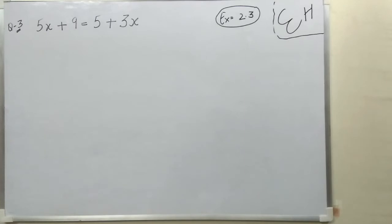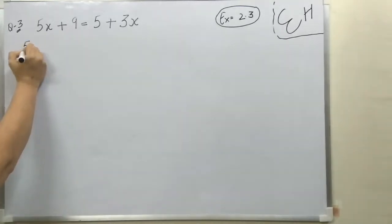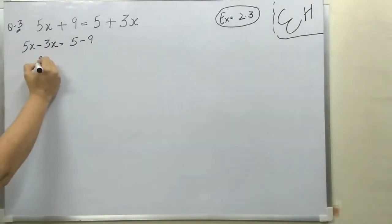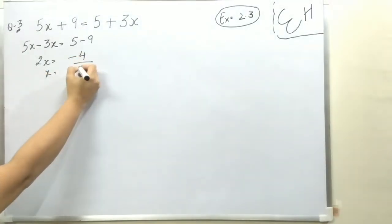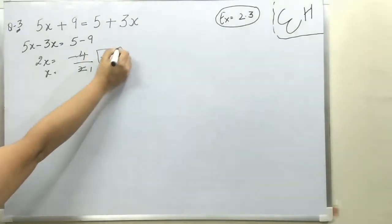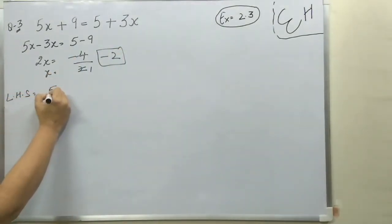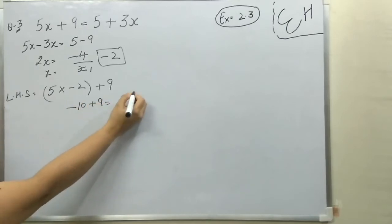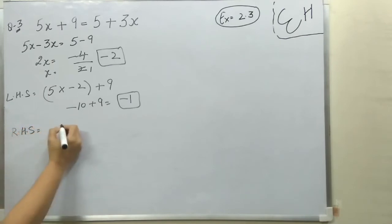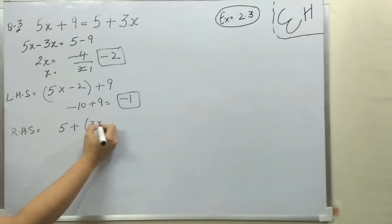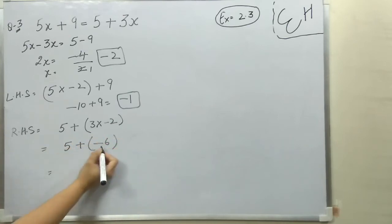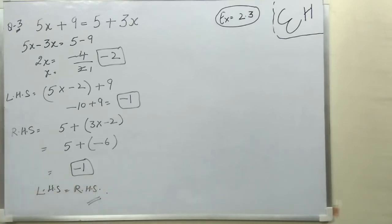Question number 3. 5x plus 9 is equal to 5 plus 3x. 3x is positive there; we bring it here and it will become negative. 9 is positive; we take it there and it will become negative. 5x minus 3x is 2x. 5 minus 9 is minus 4, so x is equal to minus 4 divided by 2, giving x is minus 2. Now put it in LHS: 5 into minus 2 plus 9 is minus 10 plus 9, which is minus 1. RHS is 5 plus 3 into minus 2, which is 5 minus 6, giving minus 1. So LHS is equal to RHS — your answer is correct.